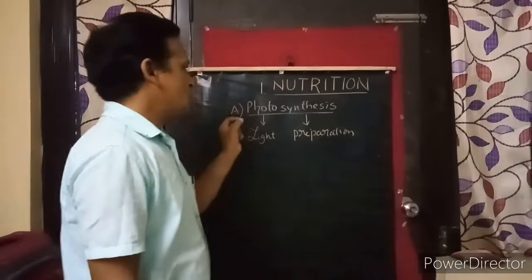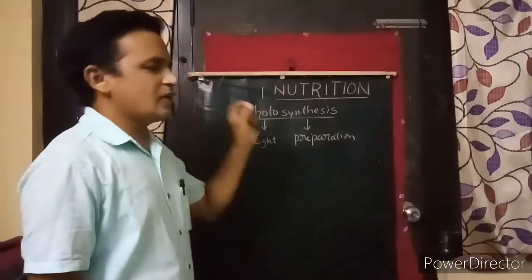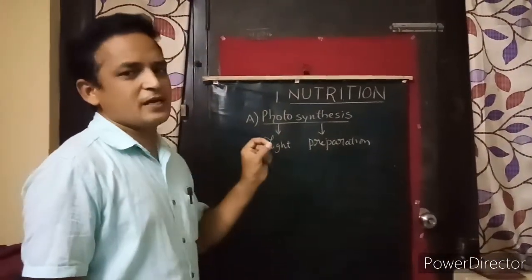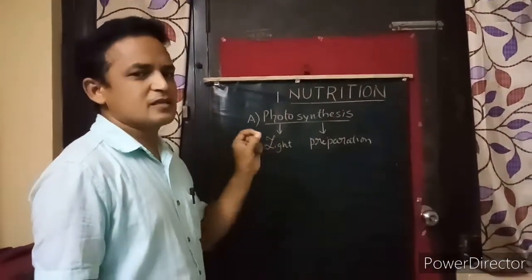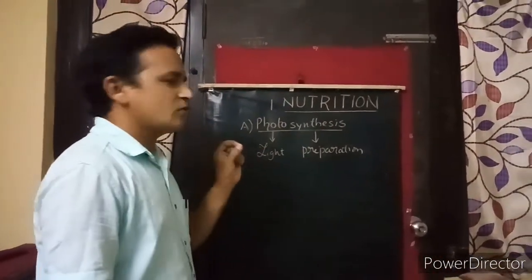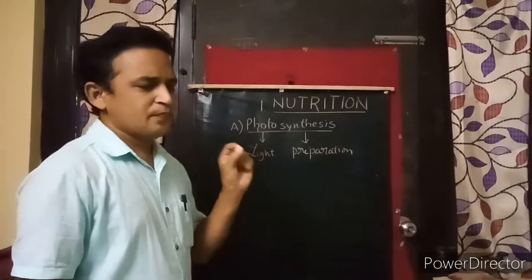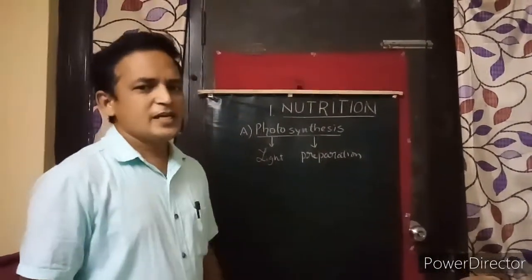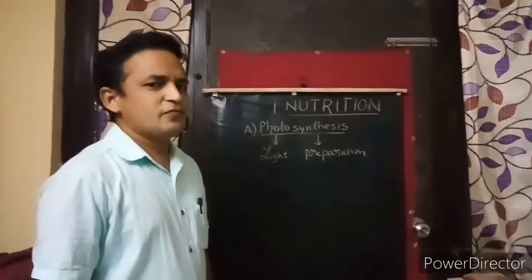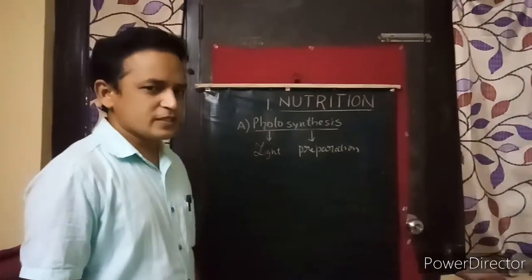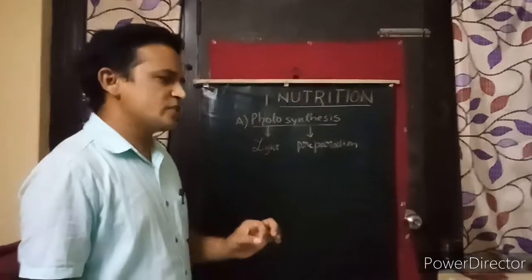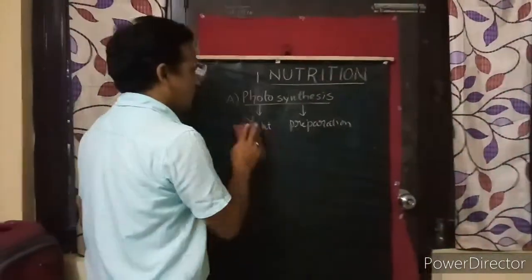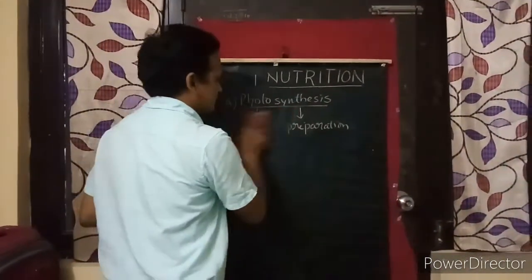In this process, food material — especially carbohydrates — are prepared with the help of sunlight. This biochemical reaction is called photosynthesis. We need to know the definition of photosynthesis.